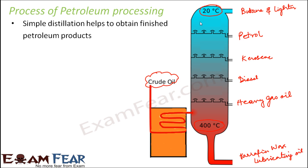All these components boil at different temperatures. For example, petrol boils somewhere around 70 degrees Celsius. Kerosene boils somewhere around 120 to 130 degrees Celsius. Diesel boils above 200 degrees Celsius. Heavy gas oil boils somewhere around 300 degrees Celsius. So all components boil at different temperatures and that is how we are able to segregate them, taking each one separately from the distillation column. This is how petroleum gets separated into its components.